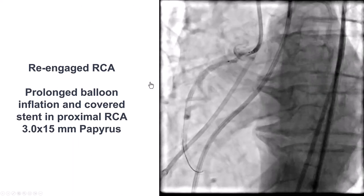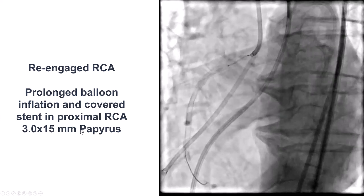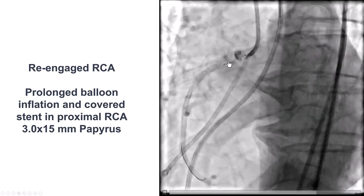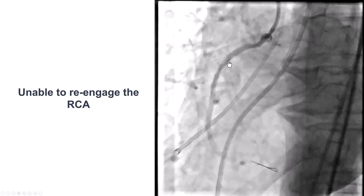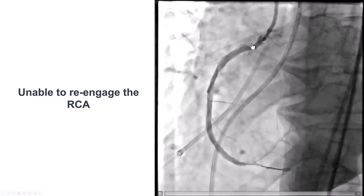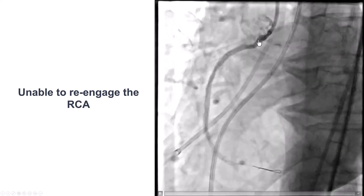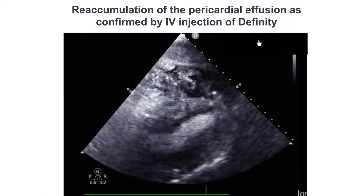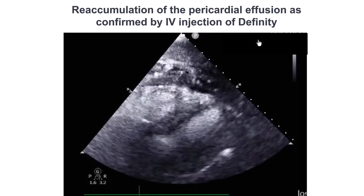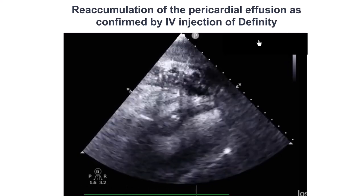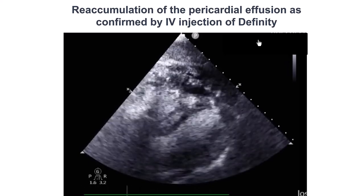We were then able to re-engage and placed a PK Papyrus — 3×15 mm — in the right coronary artery. The problem was we had difficulty advancing equipment. It looked not perfectly sealed, but somewhat better. We had difficulty re-advancing equipment, and once we lost access to the RCA, we could not re-engage. When the papyrus is protruding back into the aorta, it can be very hard to re-engage the vessel.